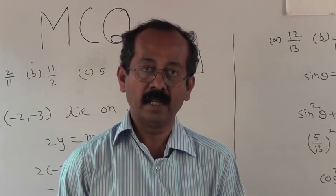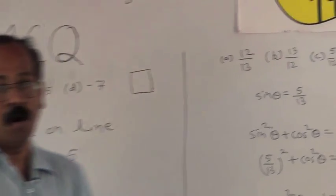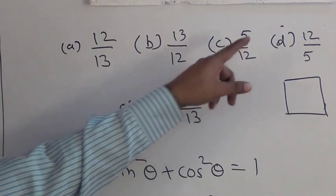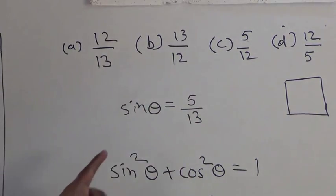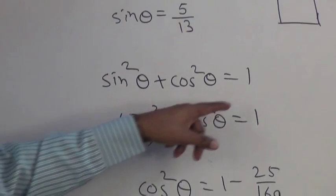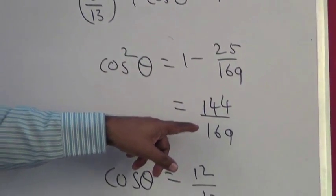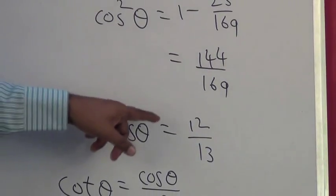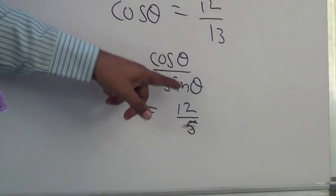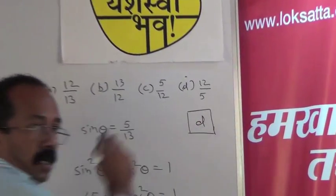Example 7: If sin θ = 5/13, where θ is an acute angle, what is the value of cot θ? Alternatives: A) 12/13, B) 13/12, C) 5/12, D) 12/5. Using sin²θ + cos²θ = 1, substituting (5/13)²: cos²θ = 1 − 25/169 = 144/169, so cos θ = 12/13. Therefore cot θ = cos θ / sin θ = 12/5. Alternative D represents 12/5, so D is the correct alternative.